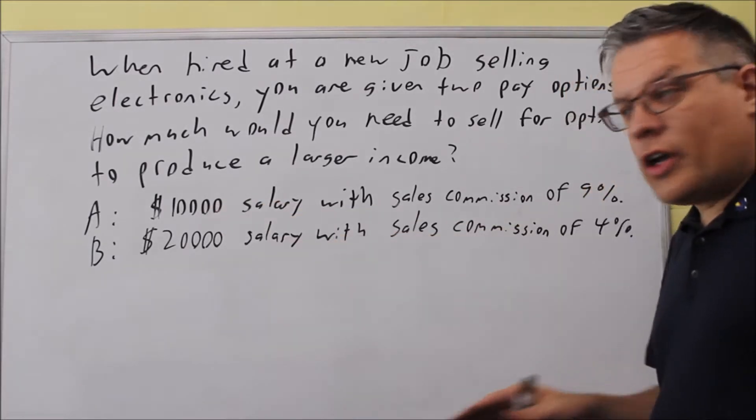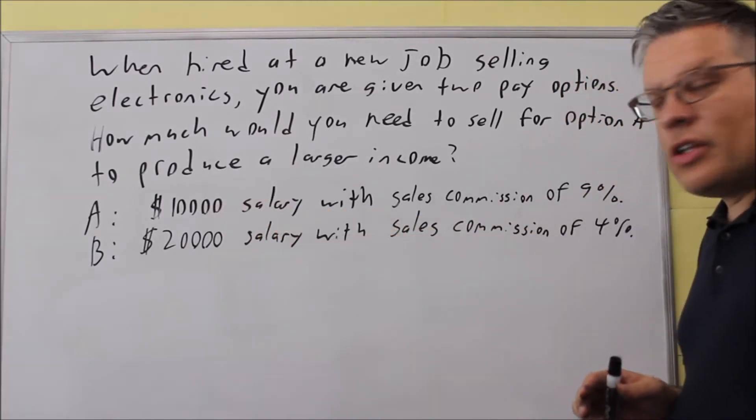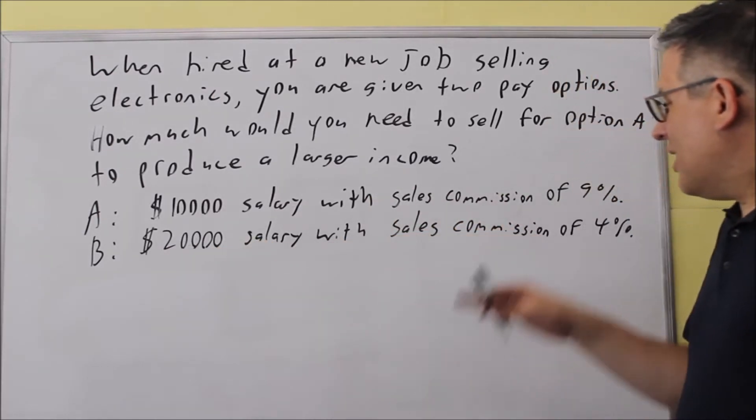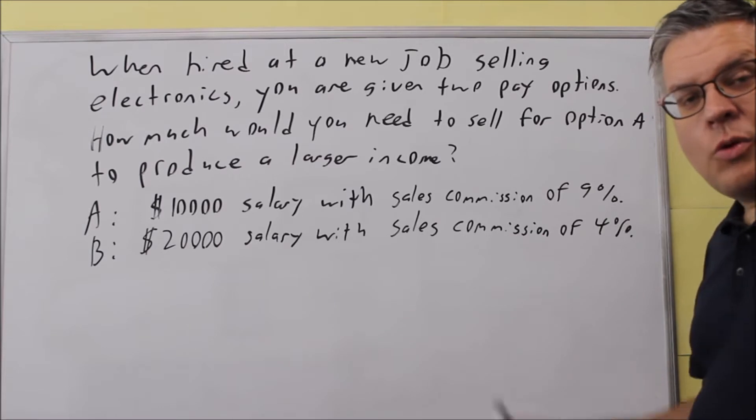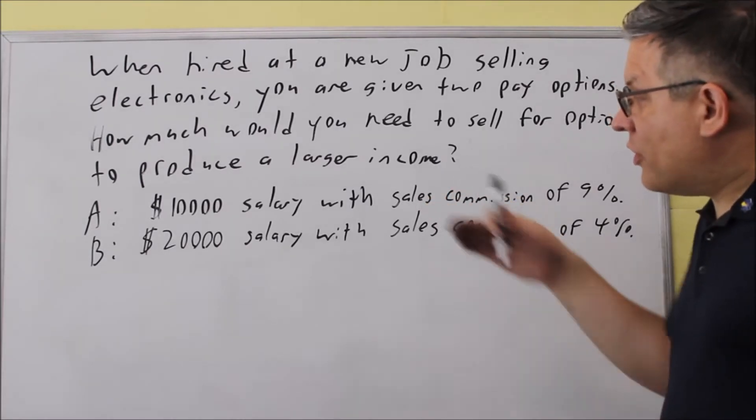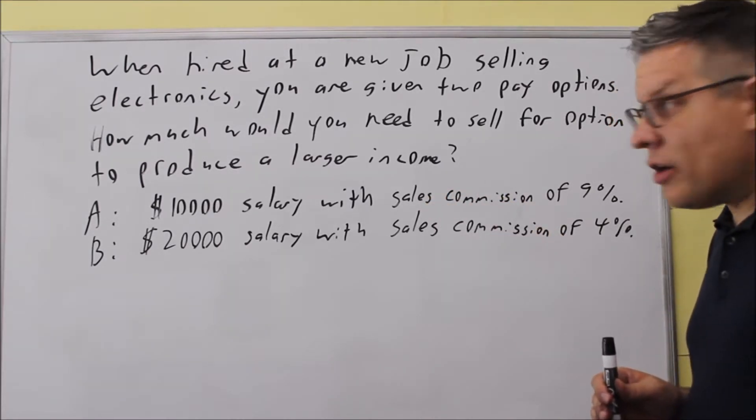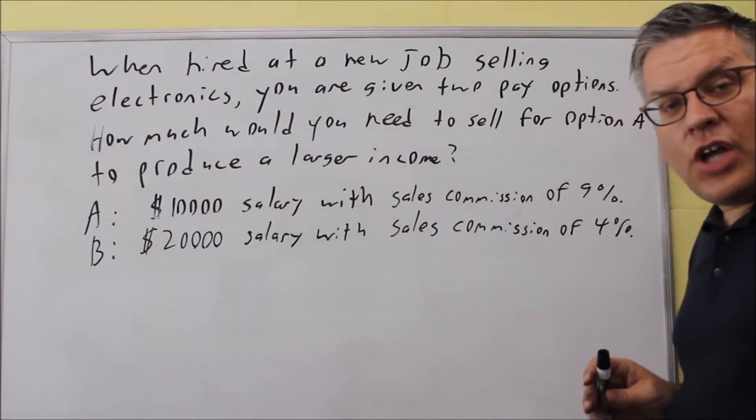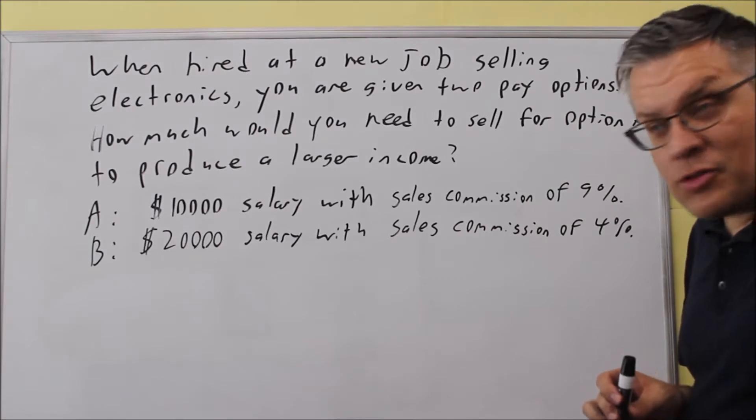The first one is $10,000 a year salary and you get a sales commission of 9%, or $20,000 a year and the commission is 4%. We need to come up with a formula for both of these and then we're going to compare and set up an inequality here and see how much you have to sell in order for option A to be the better option.